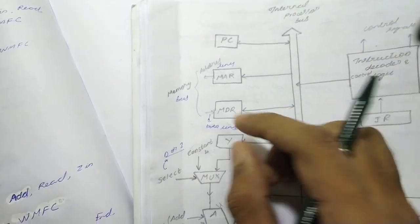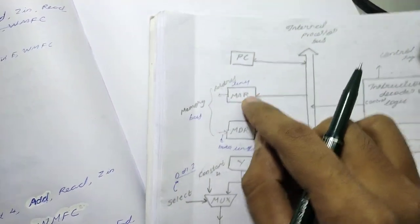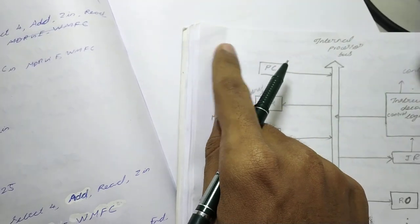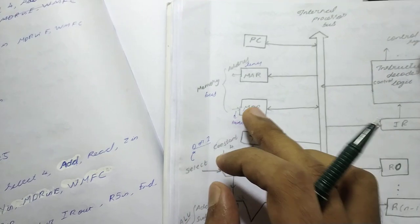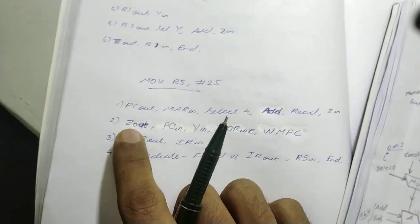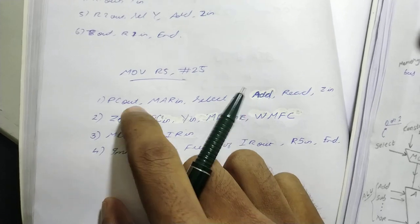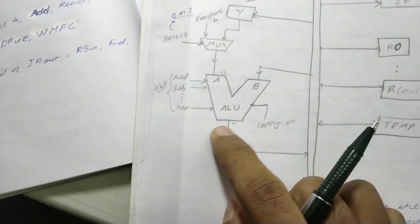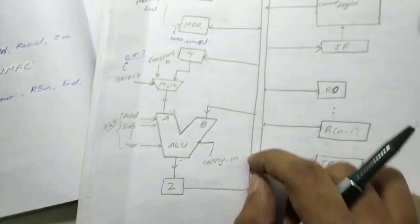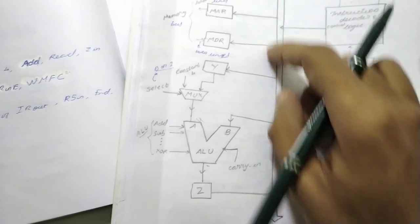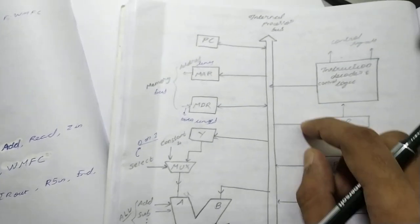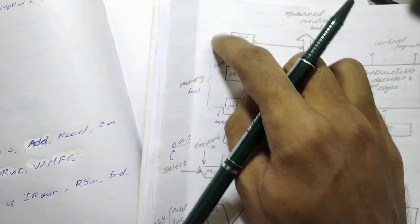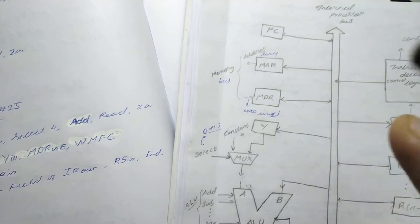When the Read control signal comes, the value in MAR — the memory address — is taken by the memory controller, which selects that position from RAM, and through the memory bus the instruction should come to MDR. Now in the second clock cycle, we do Z out — Z holds the incremented PC value — which goes onto the internal processor bus, giving us the incremented PC value on the bus.